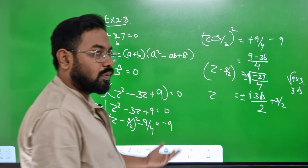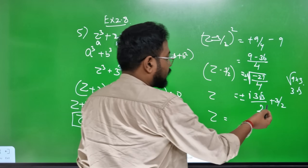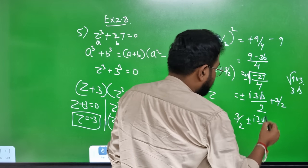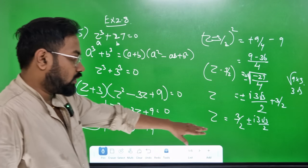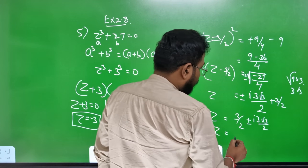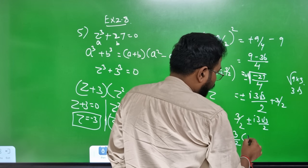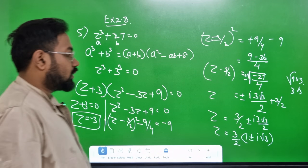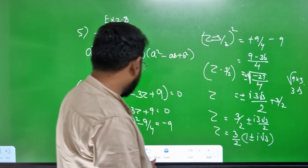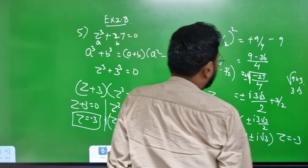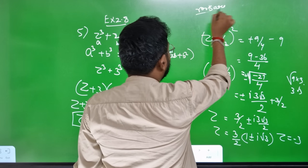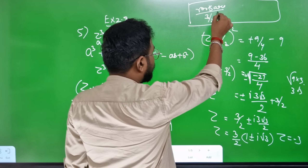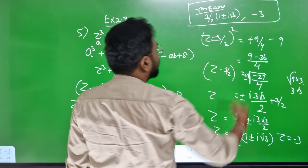That is the answer. So z equals minus 3 by 2 plus i times root 3 by 2, plus or minus. So 1 plus or minus i root 3. Equals minus 3. There will be two answers. The roots are: z equals minus 3 by 2 times 1 plus or minus i root 3, and z equals minus 3.